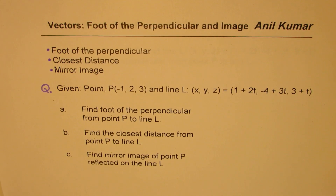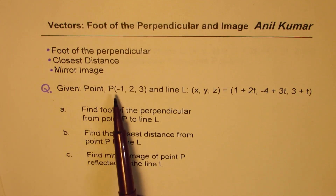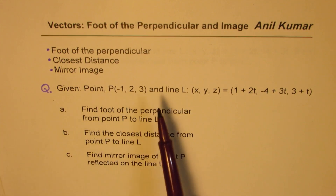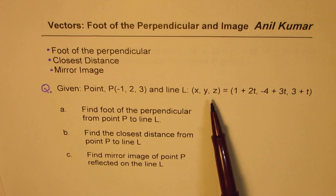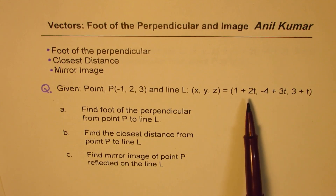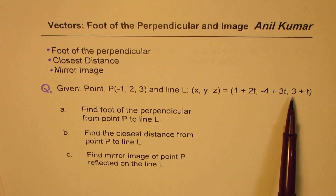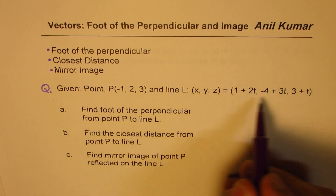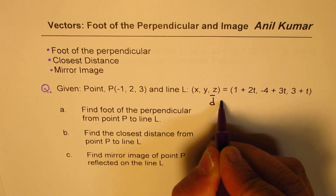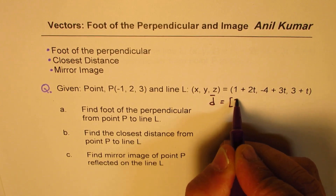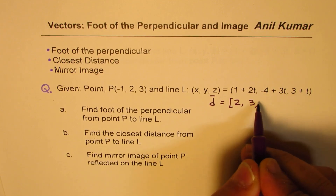The question before us is that we are given a point P(-1, 2, 3), and the line L in parametric form, where x, y, z is equal to 1+2t, -4+3t, and 3+t. The direction vector for this line is (2, 3, 1).